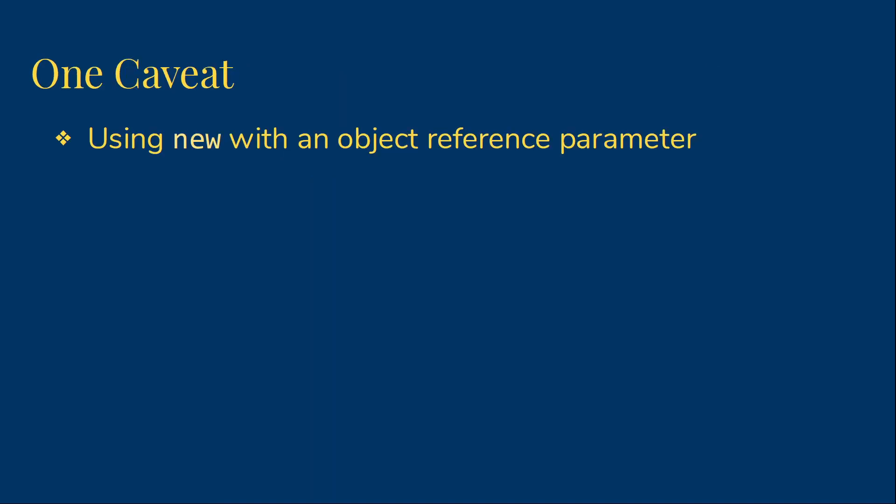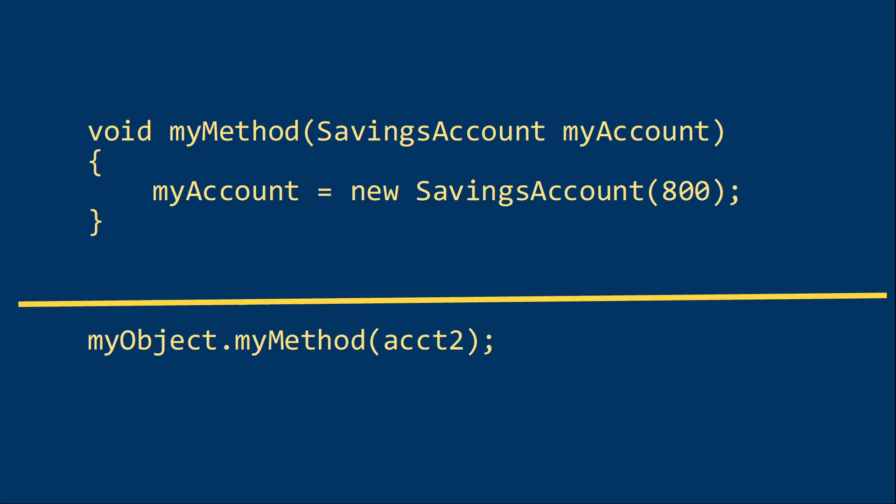There is one caveat to this. Because we're passing the reference by value, we can change the object that the reference is pointing at. But we do need to remember that we only passed a copy of that address. This will matter if we do things like use new to store a new value in our object reference parameter, or otherwise assign a different memory address.